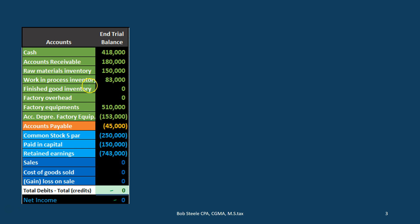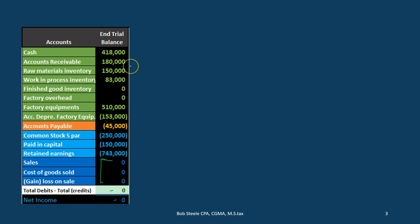The green accounts are assets. The orange accounts are liabilities. Equity is in light blue. Income is in dark blue. Net income is of course these accounts down here. We will be focusing in on the inventory type accounts when we are talking about the job cost system.